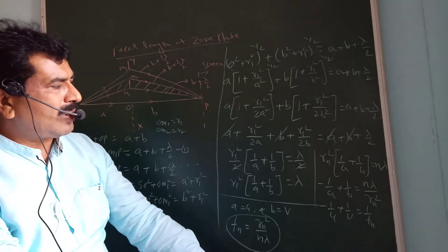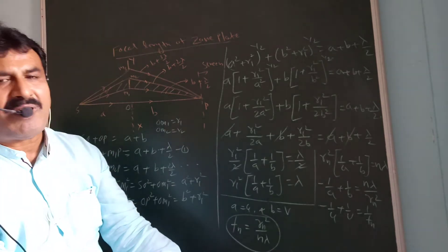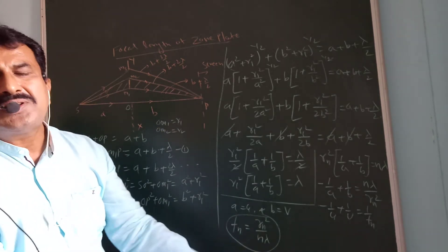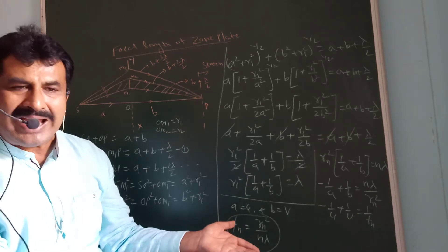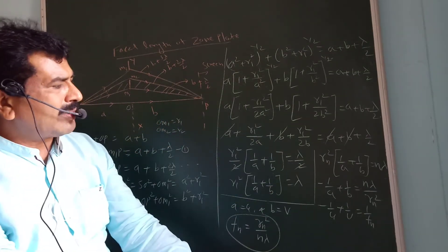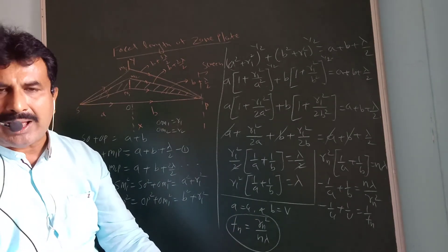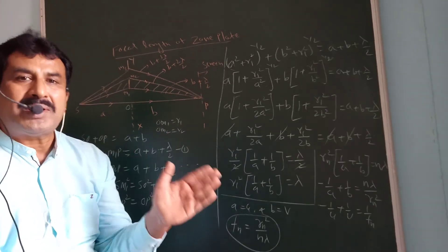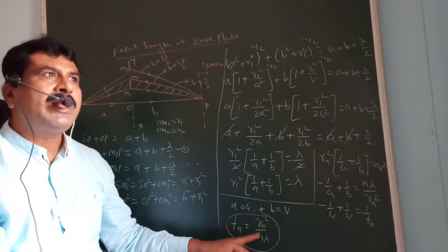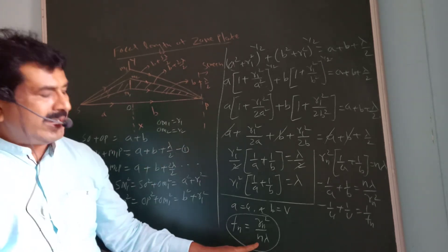For the nth zone: 1/A + 1/B = nλ/Rn². This equation is the same form as the lens formula: 1/U + 1/V = 1/F, where U is the object distance, V is the image distance, and F is the focal length. Comparing the two, we get Fn = Rn²/(n·λ). So the zone plate behaves like a converging (convex) lens, and its focal length is Fn = Rn²/(nλ).